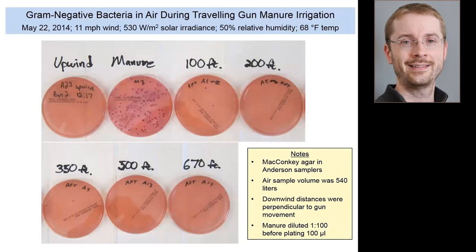To give an intuitive sense of the concentrations we encountered: an upwind control shows nothing growing, a sample of manure diluted 1-to-100 shows a lot of growth, but just 100 feet from the wetted perimeter, 540 liters of air contains only two colony-forming units, and further downwind there's basically none. So even though a lot of manure comes out of these systems, you can be just a short distance away and only a very tiny fraction of it is actually making it downwind.